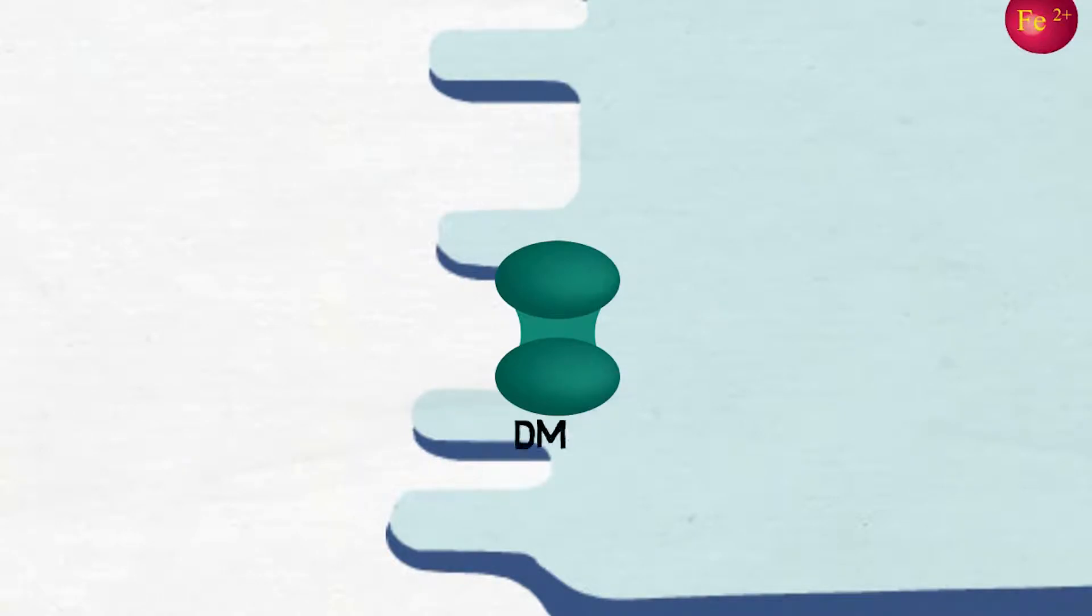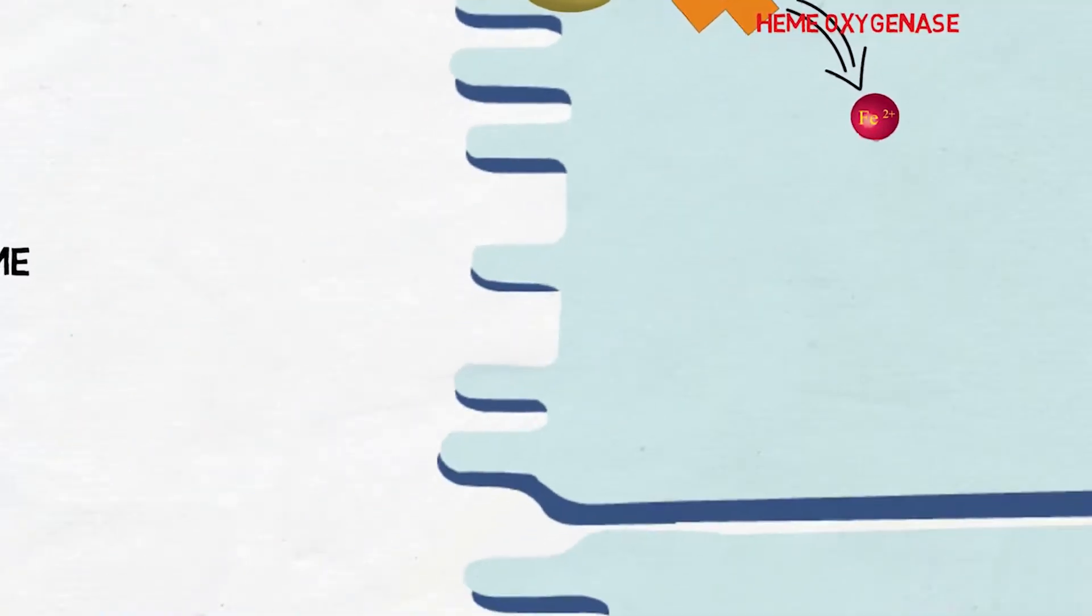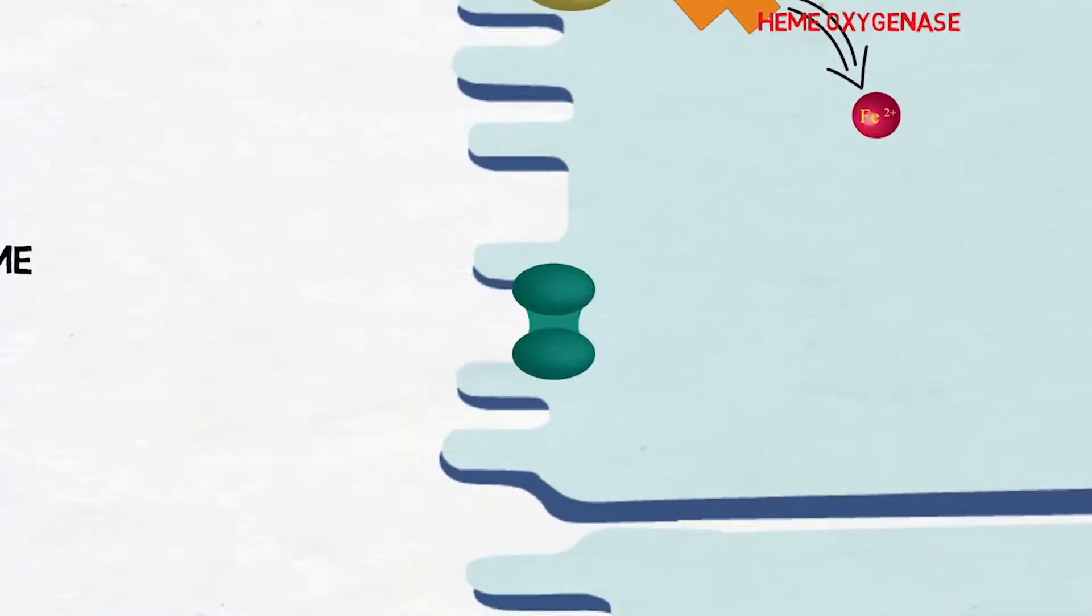Non-heme iron absorption into the enterocyte is performed by a proton-coupled divalent metal transporter also known as DMT1. As the name indicates, this protein molecule can transport only ions which have the valency 2.